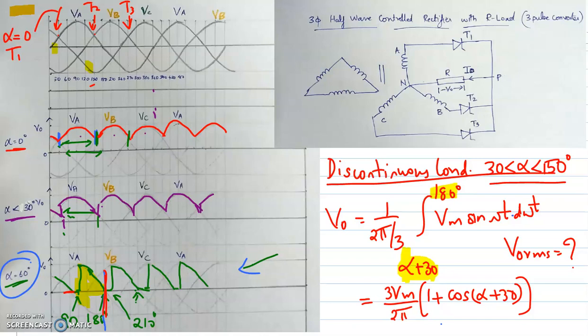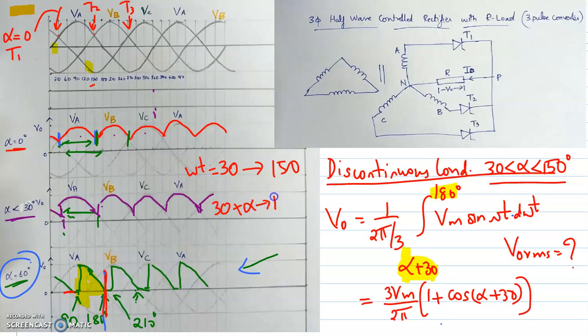For the continuous conduction mode, when alpha equals zero, the thyristor conducts from 30 to 150 degrees. If alpha is between 0 and 30 degrees, the conduction range is from 30 plus alpha to 150 plus alpha. That summarizes the operation for the continuous conduction mode.